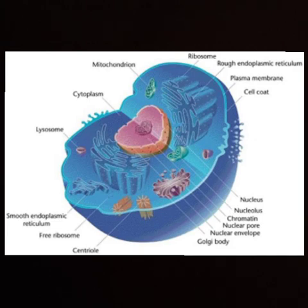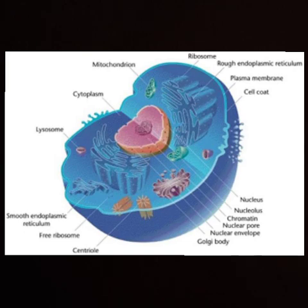In Prokaryotic cells, a true nucleus is absent. However, a nucleus-like structure called the nucleoid is present, located at the center of the cell.